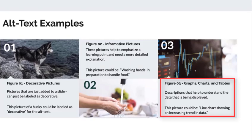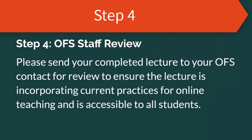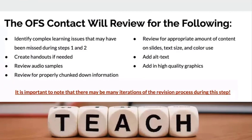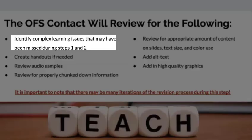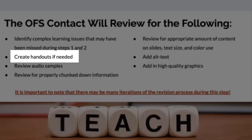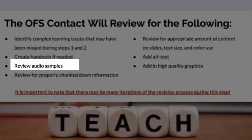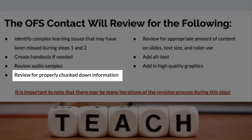Step four is staff review. The drafts are sent to us and we review for teaching practice and accessibility — two things. Here's a list of things we're looking for when we review. We'll identify any missing issues from steps one and two, and we create handouts if needed. At this point, audio samples need to be reviewed, and we also work with the instructor on chunking down information if needed.